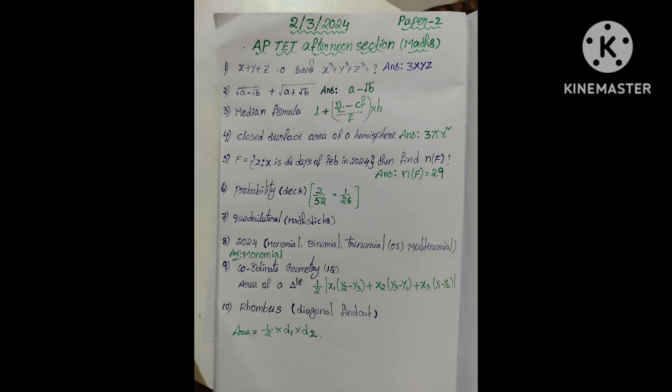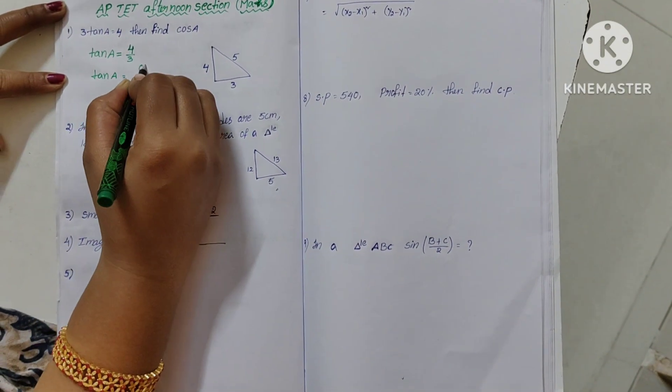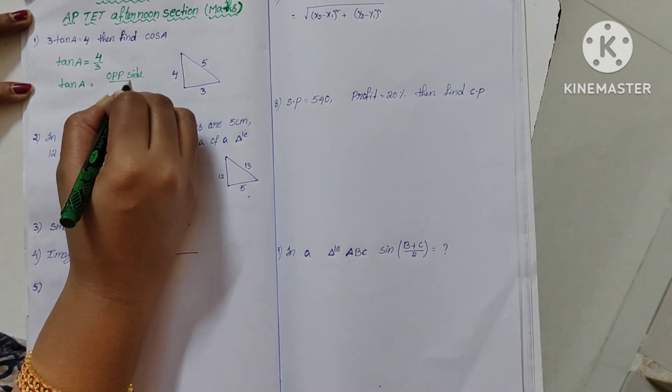Hi matho magnates, hope you all are doing great. Thank you for all your likes, shares and subscriptions. Yesterday's AP TET afternoon section maths questions - 10 questions to sum, remaining questions. Question: 3 tan a equal to 4, then find cos a.